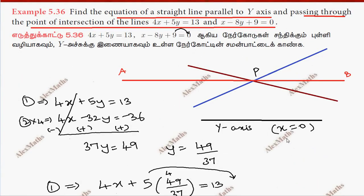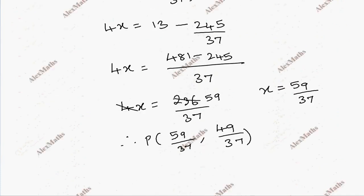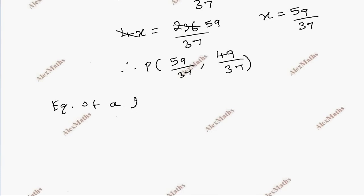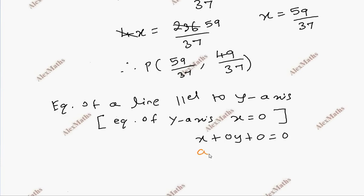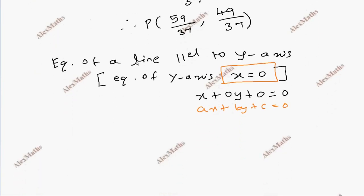Now the line parallel to the y-axis. The equation of the y-axis is x equal to 0. So the equation parallel to the y-axis is of the form x plus k equal to 0, since parallel equations differ only by the constant term.